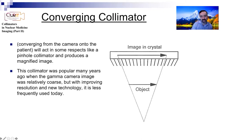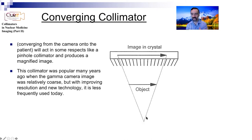Converging and diverging collimators at the moment are not really actively used. Converging is somewhat similar to the pinhole in that you are magnifying the image, and it used to be popular. But just like a single pinhole, you end up having limited sensitivity because you're focusing on a particular region, and you don't have a very good trade-off between sensitivity and looking at the whole body, since many clinical applications want to focus on whole body imaging.